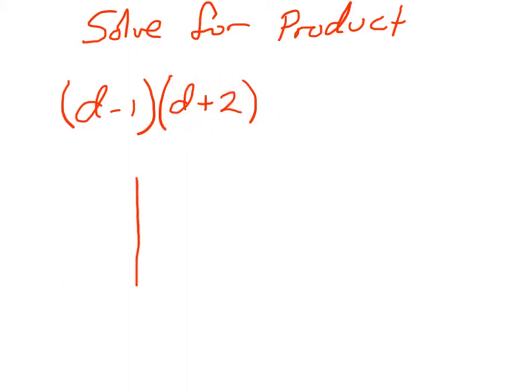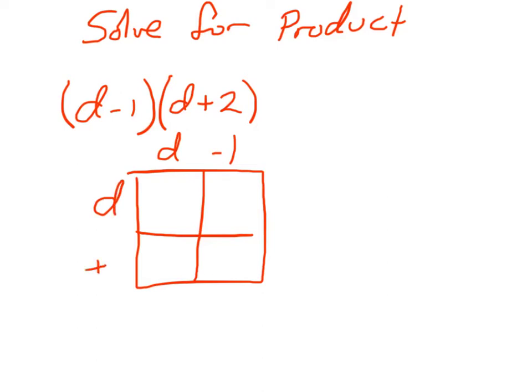Using the box method means I make a nice little box. We use the box to find the product. You can go D minus 1 on the top and D plus 2 on the side. Now we're going to multiply the two parts to get them to come in.